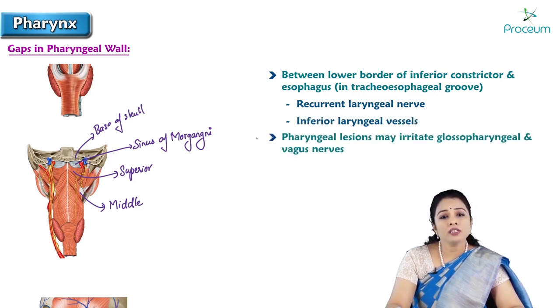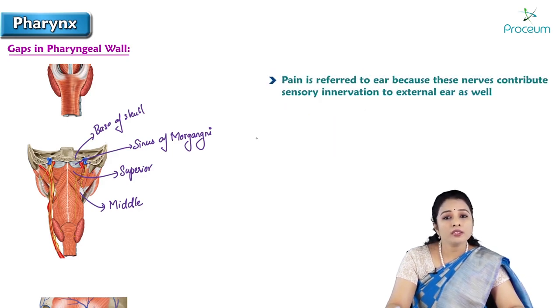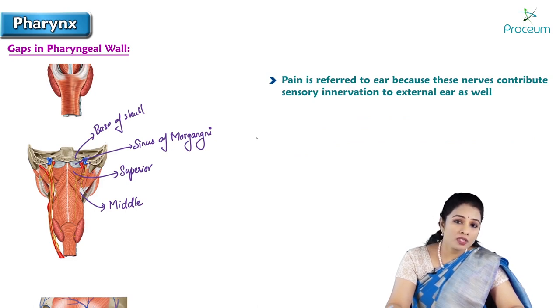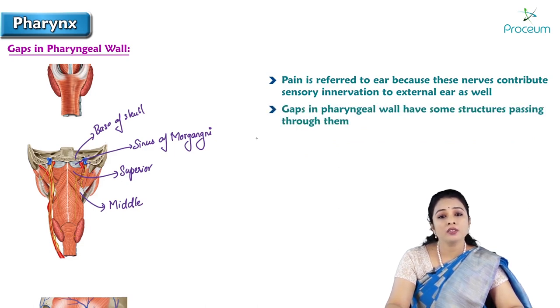Pharyngeal lesions may irritate the glossopharyngeal and vagus nerves, and the pain is referred to the ear because these nerves contribute sensory innervation to the external ear as well.